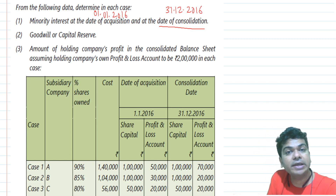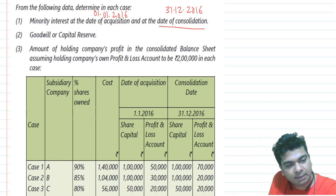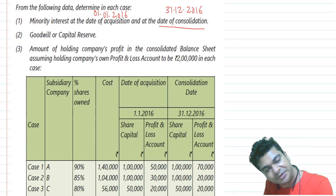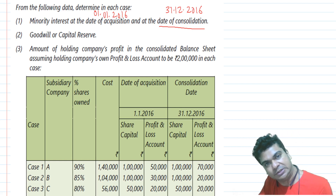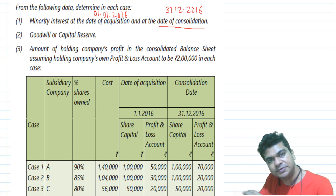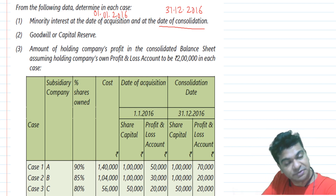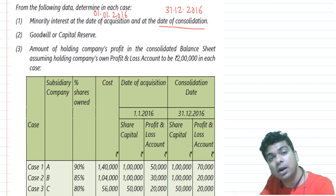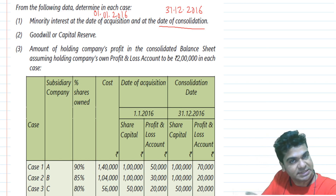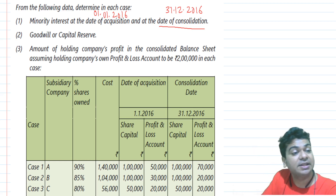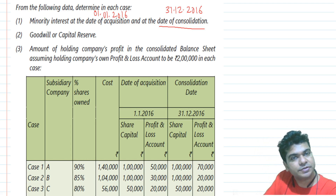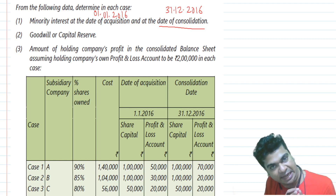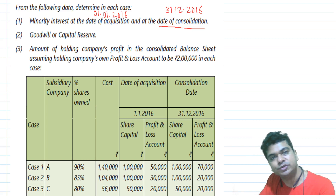We also need to determine goodwill or capital reserve arising on cancellation of the investment in equity shares in the subsidiary, and the amount of the holding company's profit and loss in the consolidated balance sheet, assuming 2 lakhs. Since no balance sheet is given, we skip the line-by-line addition principle. We will carry out the pre and post acquisition analysis, then work out goodwill or capital reserve, minority interest, and consolidated results.